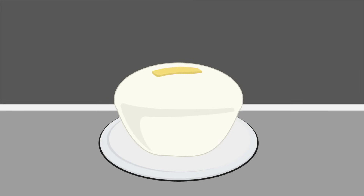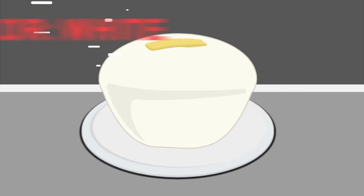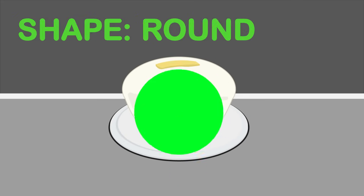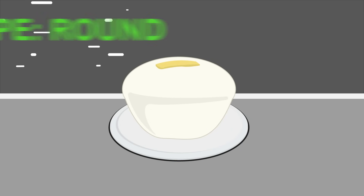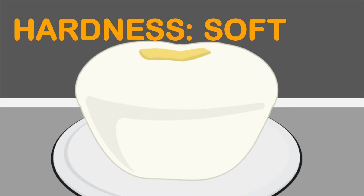Take this example: puto. We can observe that it is color white, small, and is rounded. When you touch it, the texture is sticky, but it is soft.